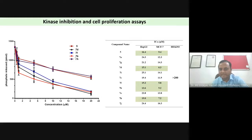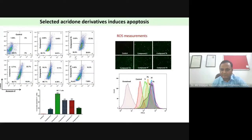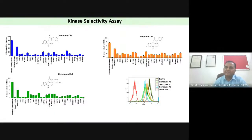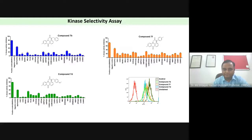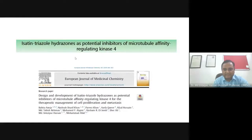The cell proliferation assay showed very low IC50 values — indicating excellent compound potency. All these compounds increased ROS production and induced apoptosis. Very importantly, we performed a kinase selectivity assay using 27 different kinases and found more than 80% inhibition specifically for MARK4 across all three compound graphs — demonstrating that compounds designed through computational techniques show genuine inhibition selectivity toward MARK4.